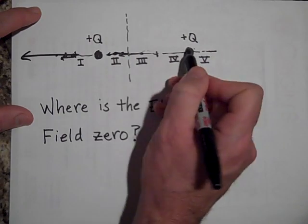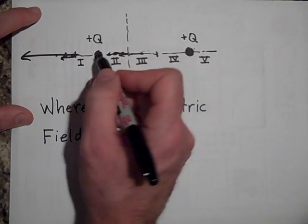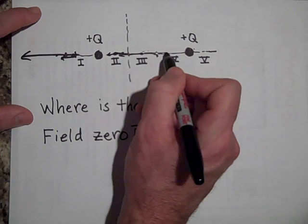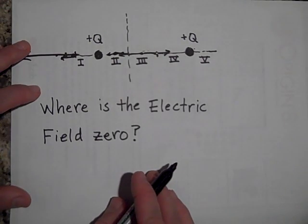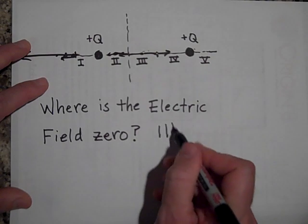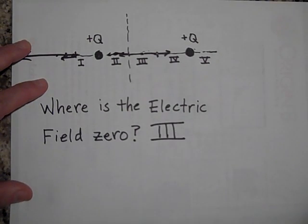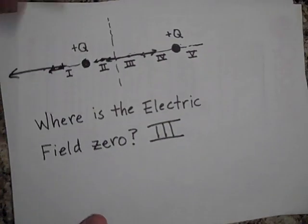where this force from this guy pushing on the test charge that way, and the force from this one pushing on the test charge this way will cancel. So where is the field zero in region three? Actually at the dead center of region three.